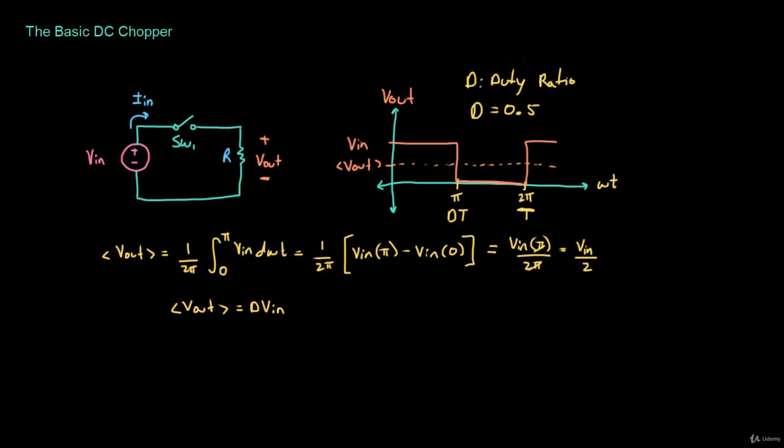This is useful because we can change the average of the output voltage by adjusting the duty ratio — increasing it to increase the average, or decreasing it to decrease the average. However, notice that the ripple of the output voltage is very high; in fact it is equal to the entire input voltage, fluctuating between Vn and 0. So this circuit is not very useful in practical applications. However, if we can filter out the ripple, we can control the average output voltage and make it somewhat constant. In the next couple of lectures we'll see how to use capacitors and inductors to filter out the ripple while still giving us the ability to step the output voltage up or down.